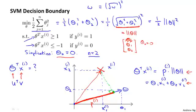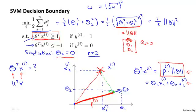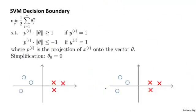What this means is that the constraints — theta transpose x^i greater than or equal to 1, or less than or equal to minus 1 — can be replaced with constraints that p^i times the norm of theta is greater than or equal to 1 (or less than or equal to minus 1), because theta transpose x^i equals p^i times the norm of theta. Writing that into our optimization objective, instead of theta transpose x^i we now have p^i times the norm of theta. The optimization objective is one half times the norm of theta squared.